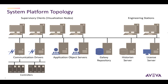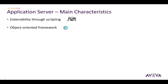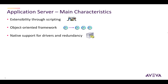Applications created with application server have distribution capabilities by nature. Going from one computer to a multi-node networked environment is simply a matter of modeling the computers that will be part of your project and distributing the load of the application across them. This functionality also allows you to easily create and deploy redundant configurations. Some of the main characteristics and benefits of application server include extensibility through a scripting engine with .NET capabilities, an object-oriented framework, and native support for DDE, SuiteLink, and OPC to access Aviva and third-party drivers such as OI servers and legacy IO servers, and redundancy capabilities.